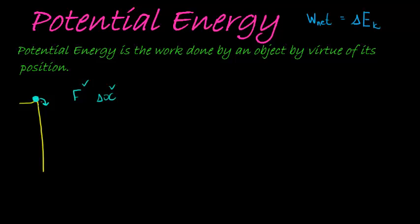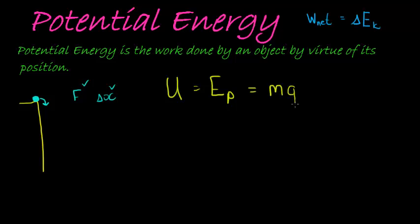Potential energy is the energy an object contains by virtue of its position. We define potential energy with the formula U, or E-P (energy potential). The formula is the mass of the object times the gravitational constant 9.8 times the height of that object. So U = mgh is the formula for potential energy.